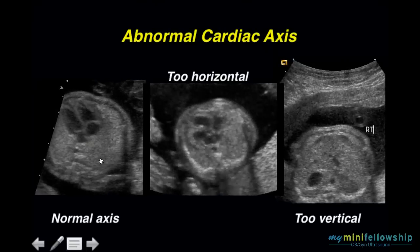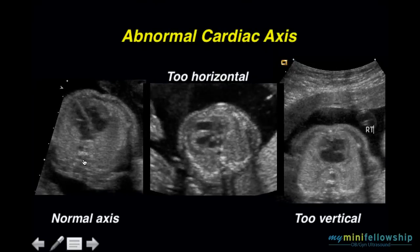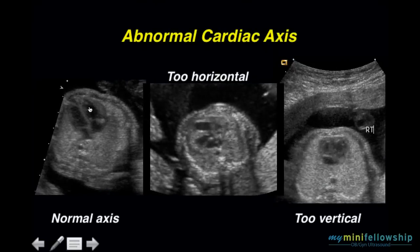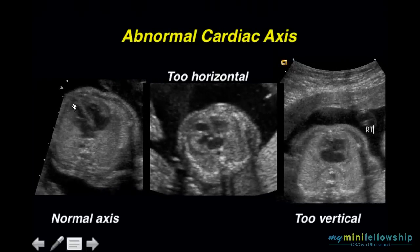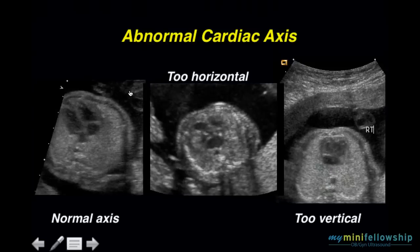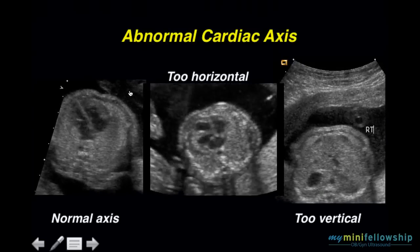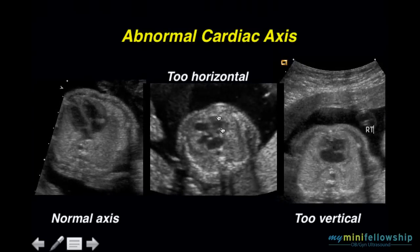So here again, just visually drawing our midsagittal line and our interventricular septum line, we can see that the axis of the heart is normal.